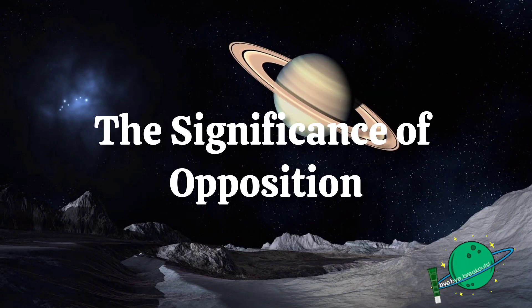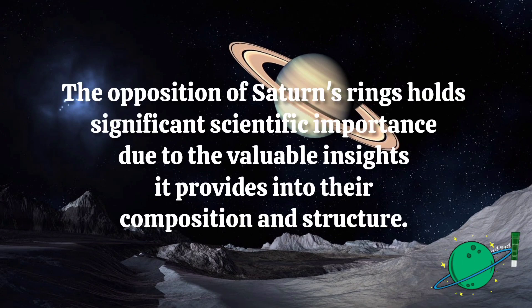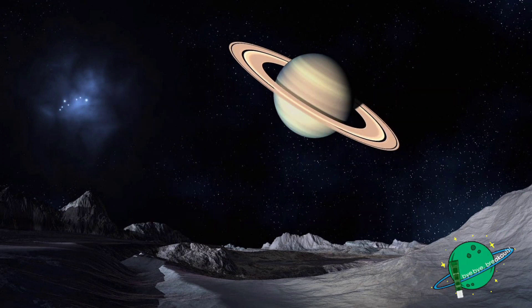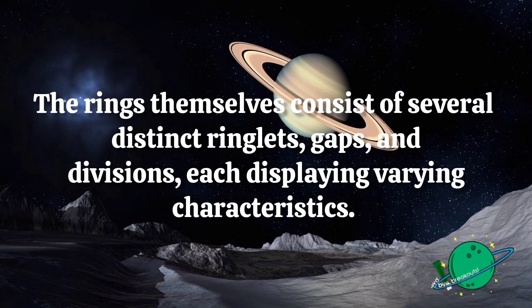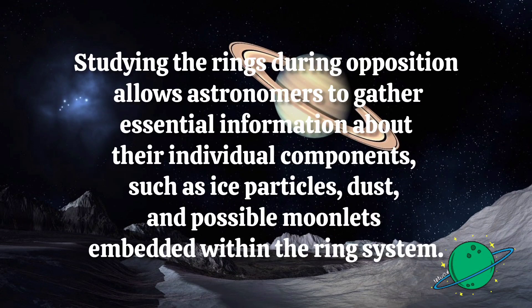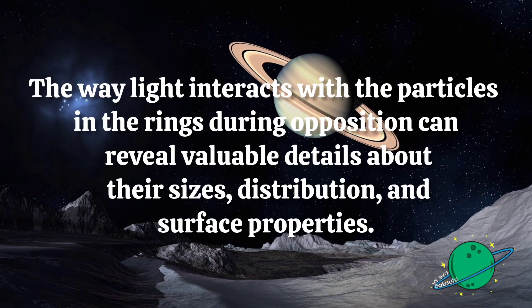The Significance of Opposition. The opposition of Saturn's rings holds significant scientific importance due to the valuable insights it provides into their composition and structure. The rings themselves consist of several distinct ringlets, gaps, and divisions, each displaying varying characteristics. Studying the rings during opposition allows astronomers to gather essential information about their individual components such as ice particles, dust, and possible moonlets embedded within the ring system. The way light interacts with the particles in the rings during opposition can reveal valuable details about their size, distribution, and surface properties.